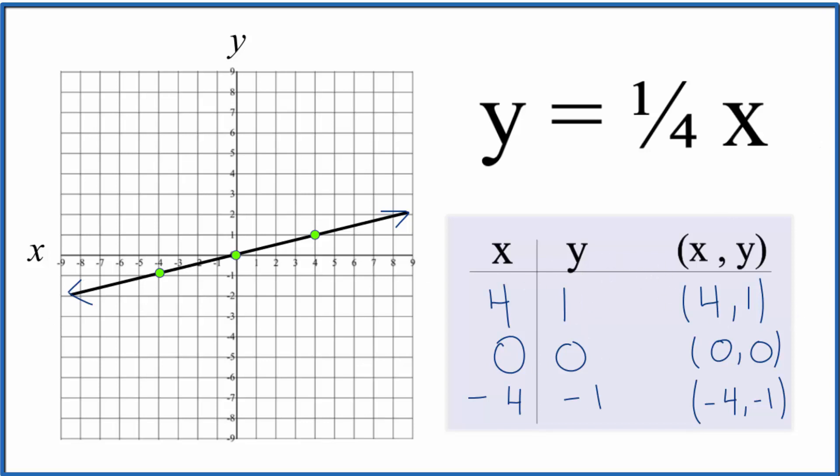Again, we could have put other numbers in and they would all show up on this line somewhere. We could have also gotten away with just using two points, but I like doing three. Then if I have an error in one of them, it'll show up.